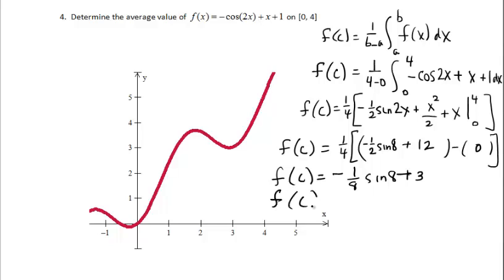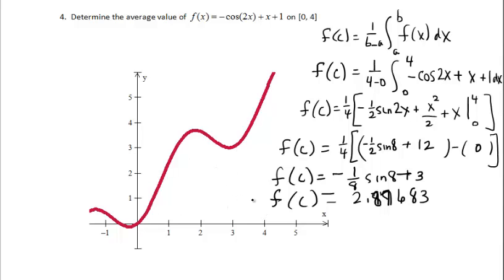Converting to a decimal to get an idea of the height: the answer is approximately 2.87. If you had a calculator from the start, you could enter the function as y1 and find the value of the integral then divide by 4. From 0 to 4, the height of the rectangle should be close to 3, so the area in the rectangle matches the area under the curve. That's the average value of a function.